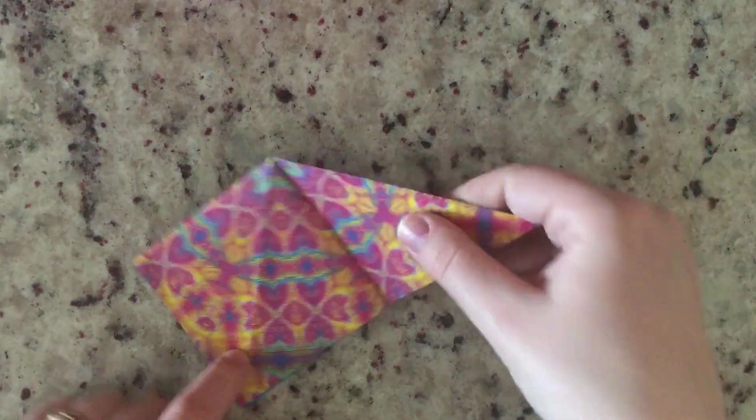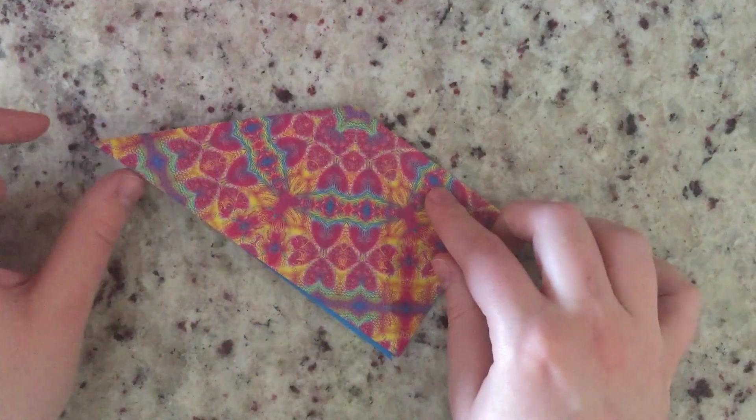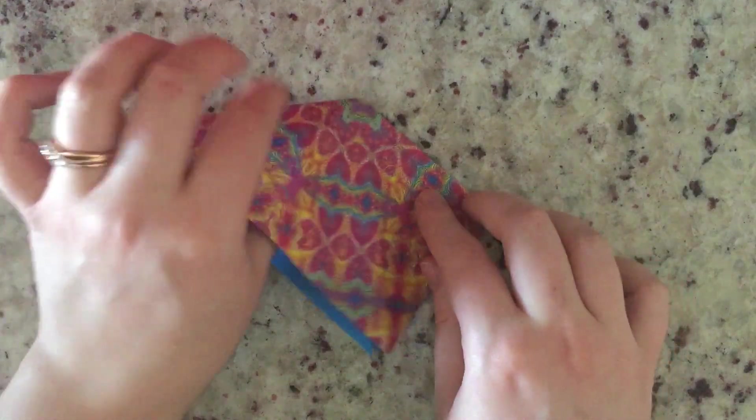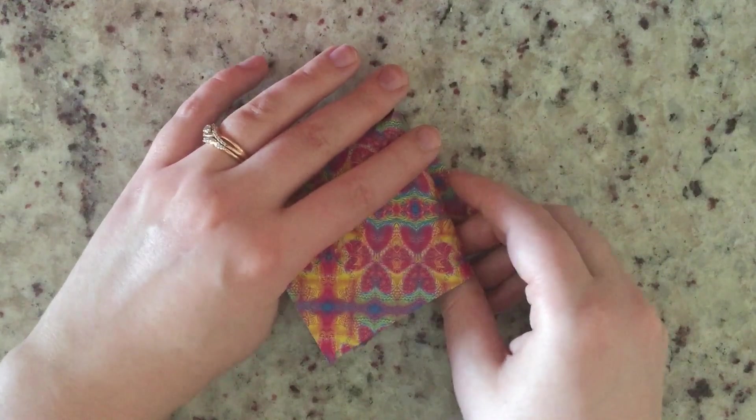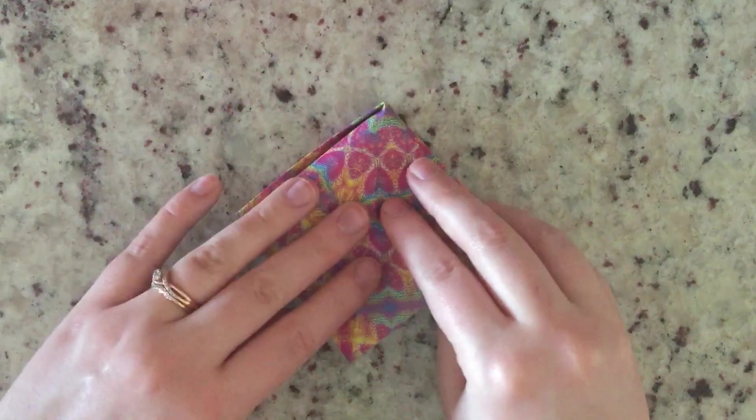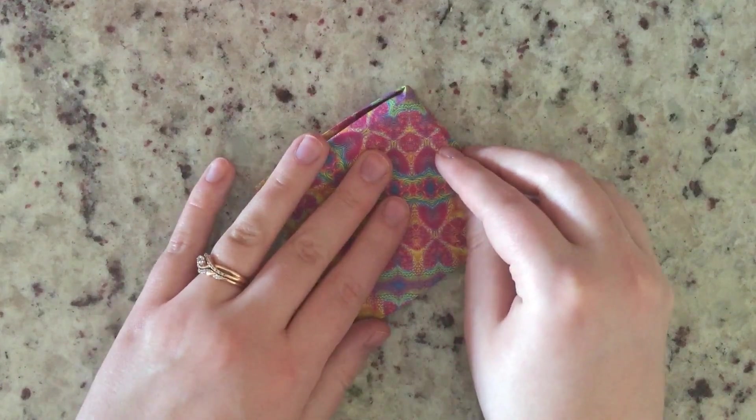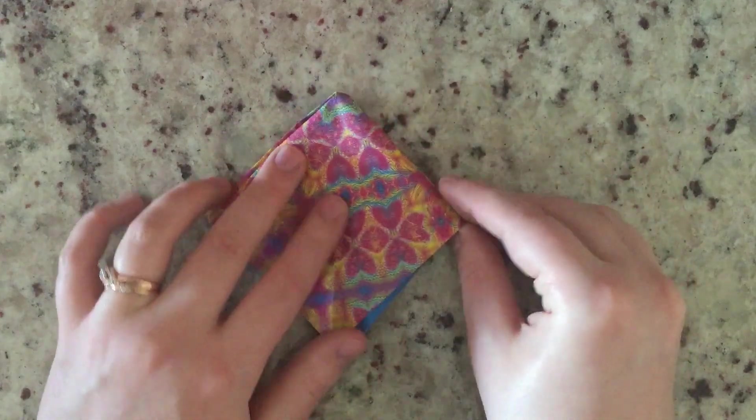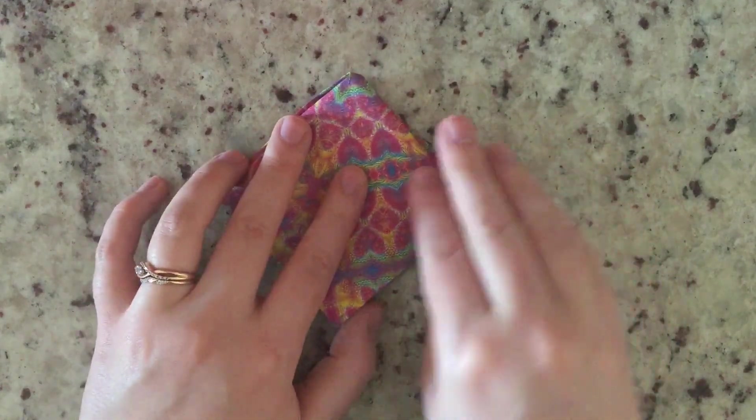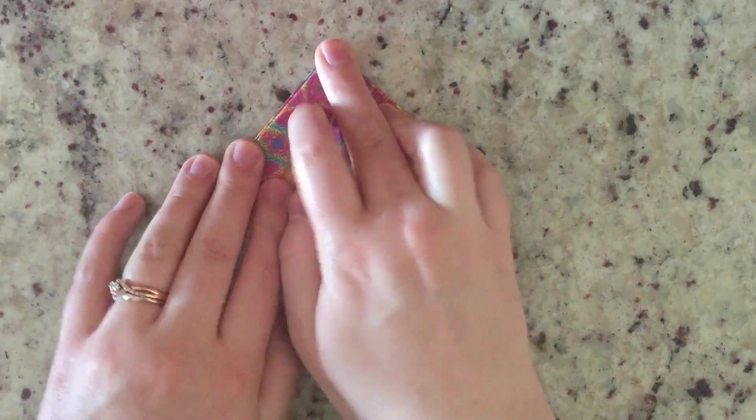Okay, so then we're going to flip it over. We're going to do the same thing with the other corner. So pick it up, stick my thumb in there, open it up a little bit, and then squish it down. You just want to make sure again that your folds meet up along the edges here.